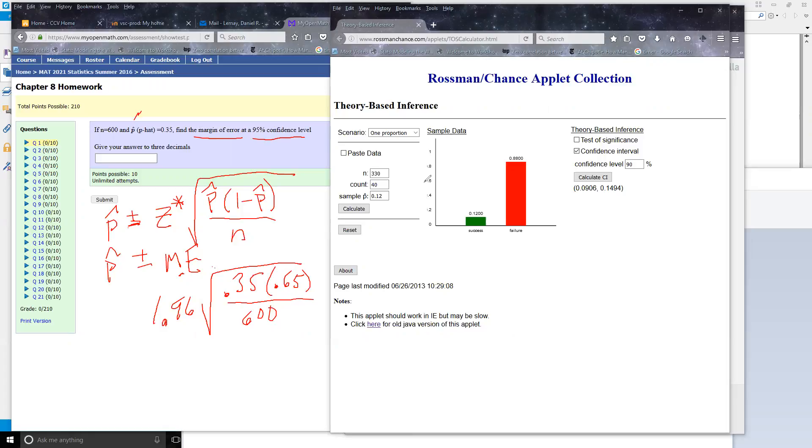1.96 times the square root of 0.35 times 0.65 divided by 600, and I got 0.038.